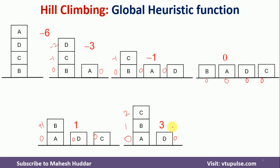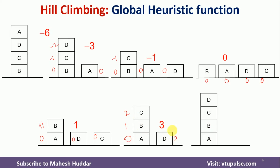Finally, I move D on top of C. All blocks are correctly placed. For A, zero. For B, one correctly placed block below it, so one. Below C, two correctly placed blocks, so two. Below D, three blocks — all correctly placed — so three. The total value of this state is plus six. We started with minus six and ended up at plus six using the global heuristic function.